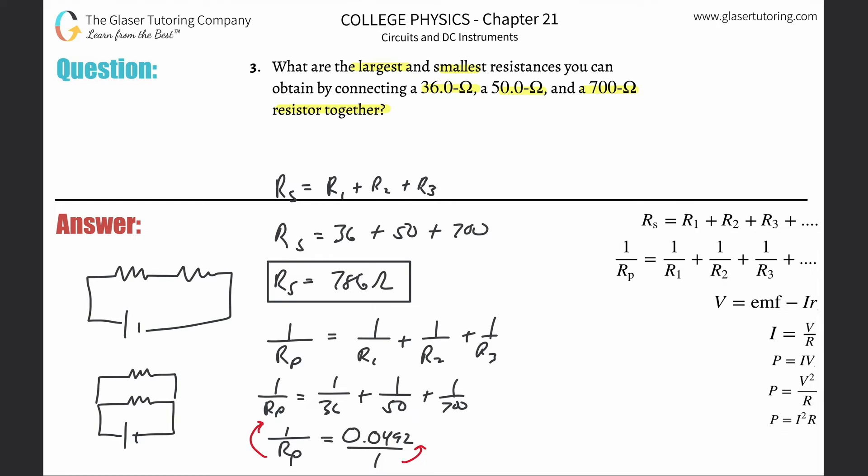Just the resistance in parallel, that will equal then 1 over 0.0492. Now take that and plug it into the calculator. So 1 divided by 0.0492, and it comes out to be about 20.3 ohms.